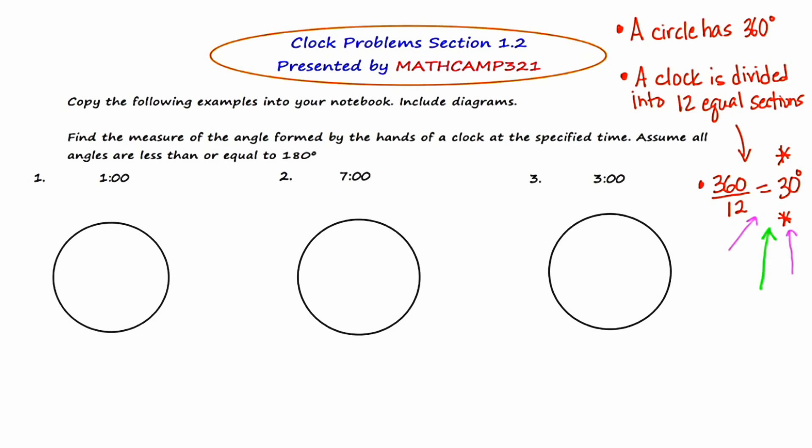So for question number one, they want us to find the measure of the angle formed by the hands of the clock at 1 o'clock. So the first three are very easy and it's going to break you in nice and slow. So what I'm going to do is try to draw as quickly as I can a clock or as much of the clock as I need. At 1 o'clock, the little hand is facing the 1 and the big hand is facing the 12. Now what I might suggest that you do is take the short hand and just extend it all the way to 1, maybe with a dotted line. So my question to you would be, how many sections of the clock is this? And the answer is that this is just one section of the clock. And we said a moment ago that each section has 30 degrees. So the answer to this first question is 30 degrees.